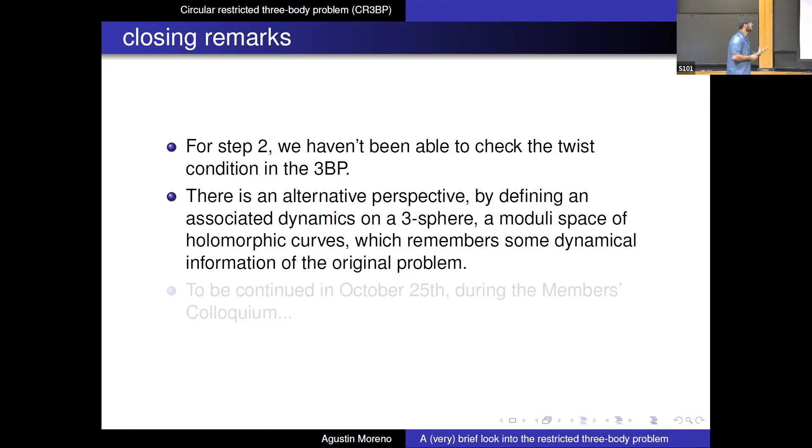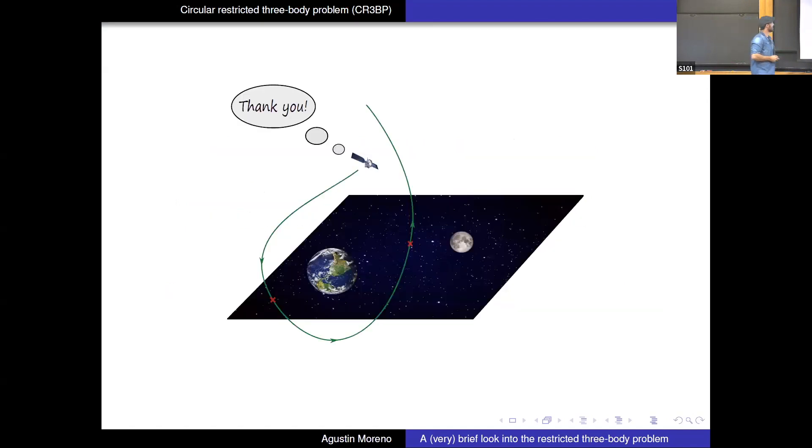There's an alternative approach in perspective on the problem, which by which I associated dynamics on a three-sphere, which is a moduli space of home on the curves. So my hope is that this dynamics, which might remember some dynamical information on the original problem. So this is a reduction. So I start with some dynamics on a five-fold. I project it down with some shadow on a three-fold. And I'm hoping that the shadow of my dynamics might see something of what's going on upstairs. So I can tell you a bit more, because this will be continued in October 25th during the Member School of Pinta. So some shameless self-advertising. Thank you very much.